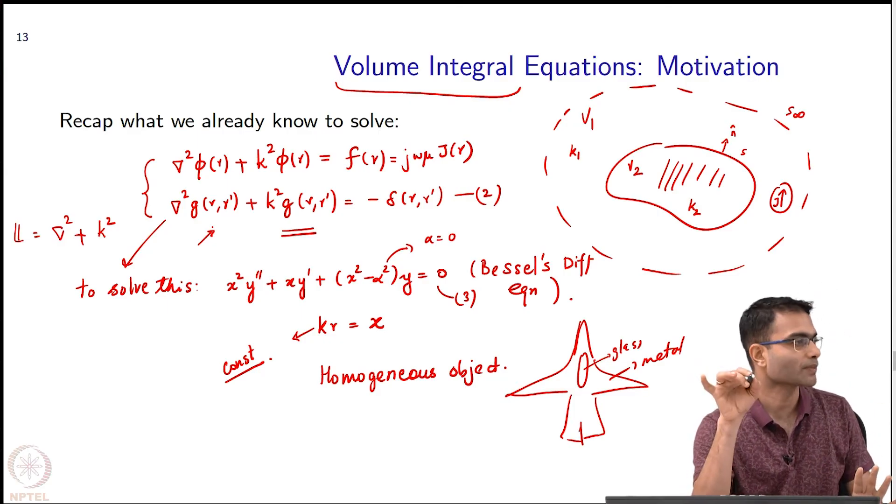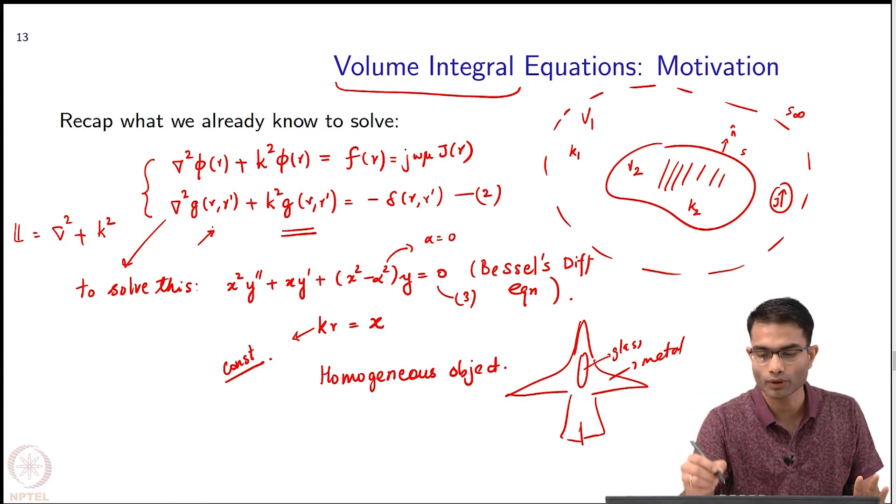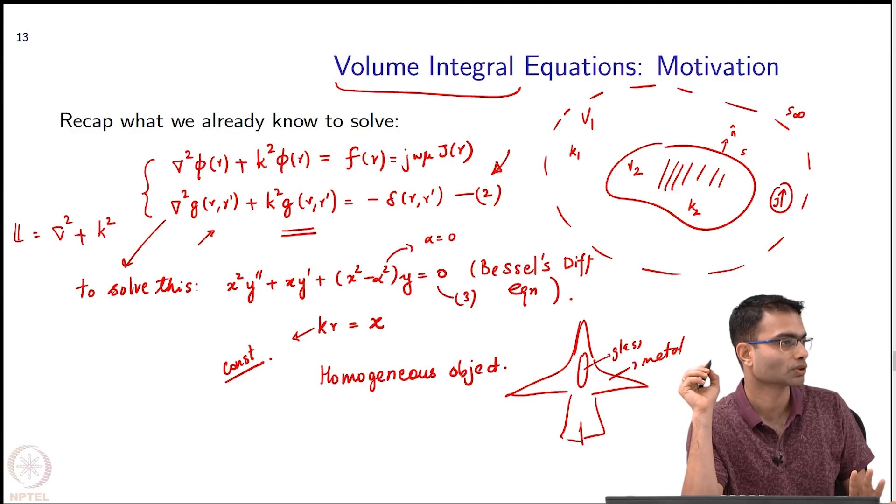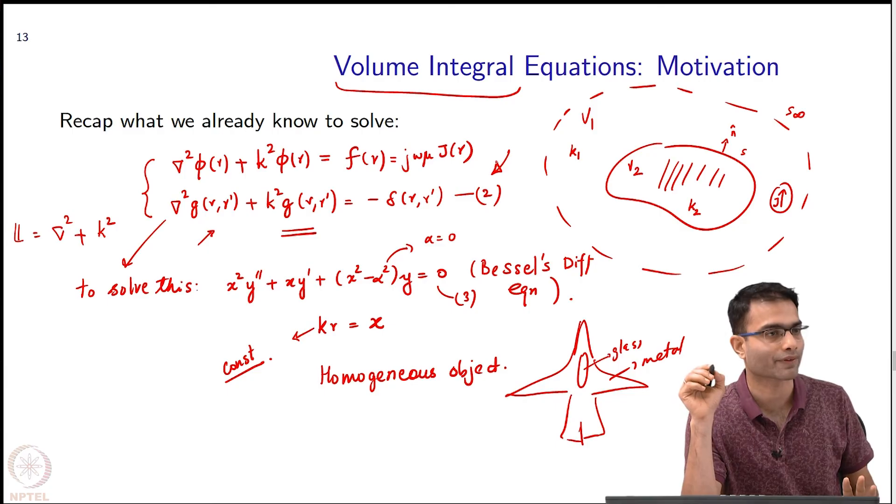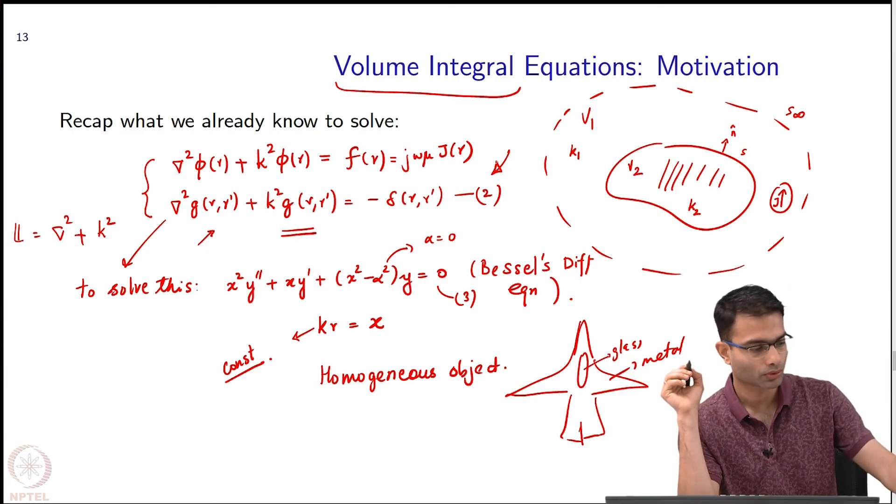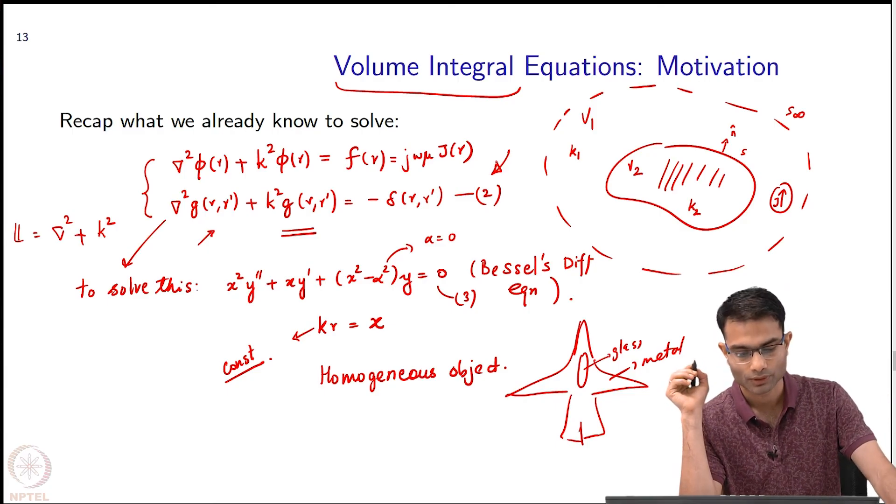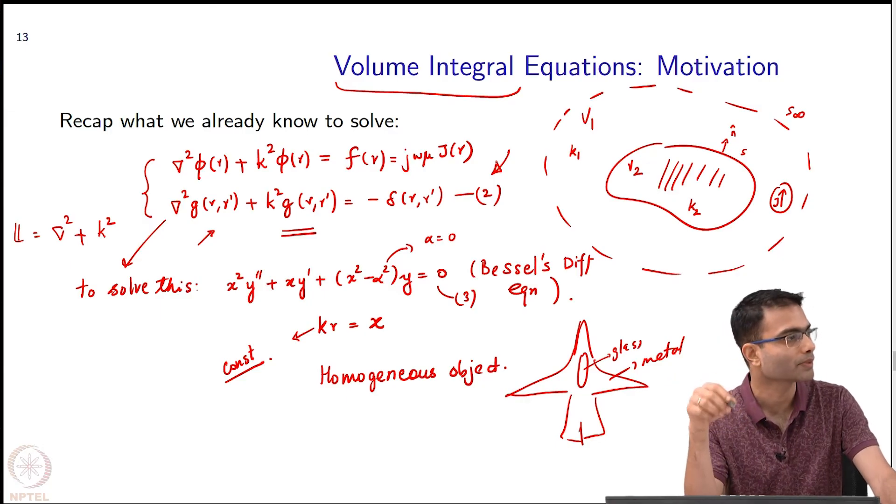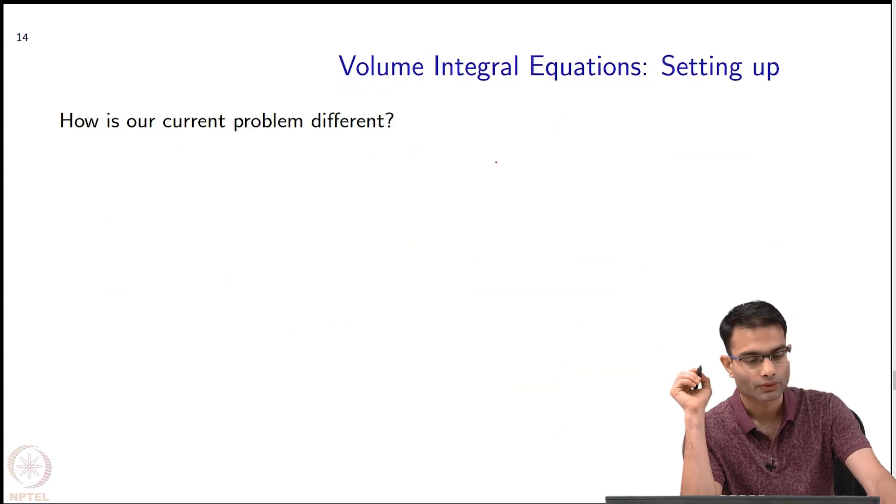We want to avoid that as much as possible and use what we already know, and what we already know is a homogeneous Green's function. The question is can I still use that somehow and get some accurate way of calculating it. We will use the Green's function, but how to get to it is going to be a little bit tricky.